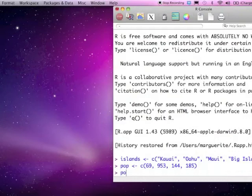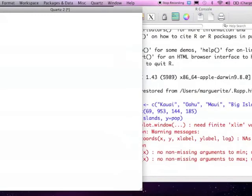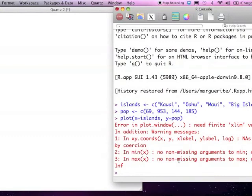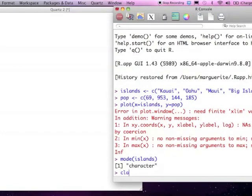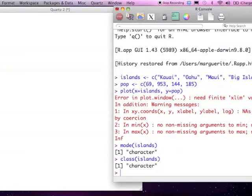If we try to plot x as islands and y as population, we get an error message. And why is that? Well, islands is a character vector. If we check the mode of islands, it's character. If we check the class of islands, it's a character vector. And there's no plot method for character vectors. There is for factors.